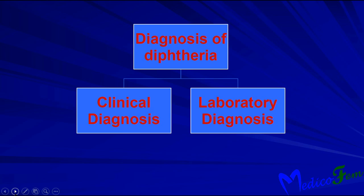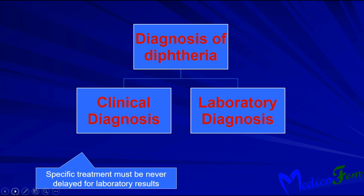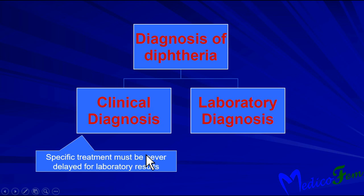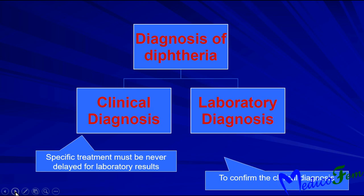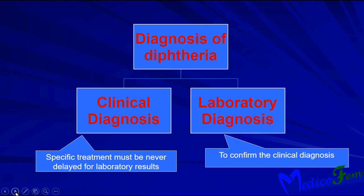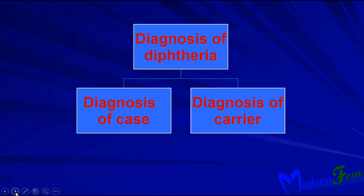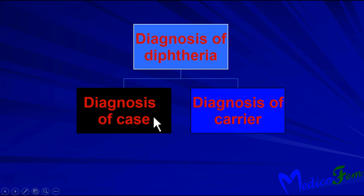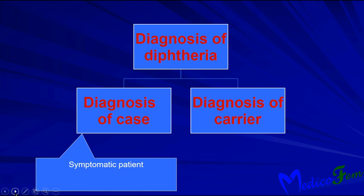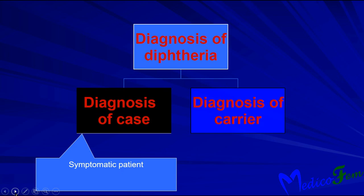Diagnosis of diphtheria is mainly on clinical grounds. Laboratory diagnosis is to confirm the clinical diagnosis. Specific treatment must never be delayed for laboratory results; treatment is started on clinical grounds only. We can diagnose cases, which are mainly symptomatic patients, and also carriers.